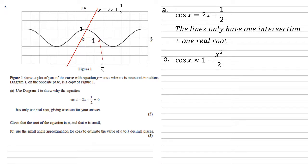The small angle approximation for cos is 1 minus x squared over 2. Replacing the cos in our original equation with that, we get 1 minus x squared over 2 minus 2x minus one half equals zero.